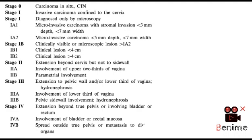Stage 2. Stage 2a: cancer has spread to the upper two-thirds of the vagina but not to the parametrial tissues. Stage 2b: cancer has extended to the parametrial tissues.